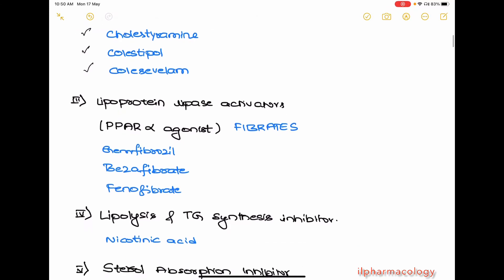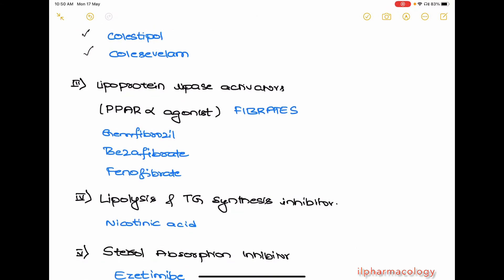Next, coming to the lipoprotein lipase activators, or it is also called PPAR alpha agonist, which is nothing but peroxisome proliferator-activated receptors alpha agonist, or it is also called fibrates. Examples are gemfibrozil, bezafibrate, and fenofibrate.